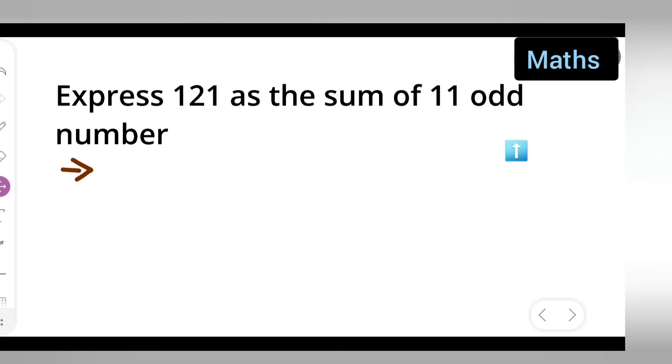What do you mean by 11 odd numbers? Like 121, 11 square is nothing but 121, right? Now this is equal to sum of first 11 odd numbers.